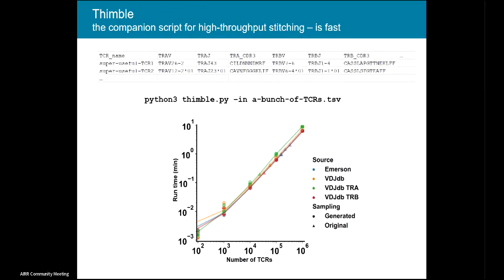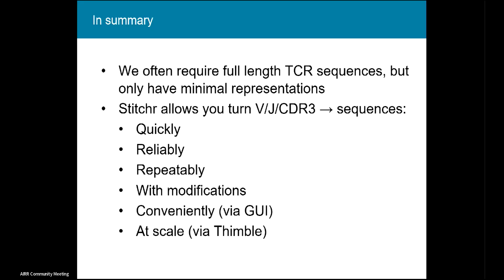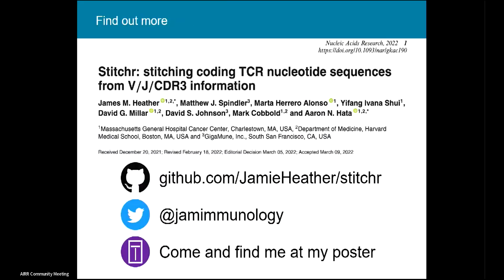We also have a high-throughput interface for Stitcher — a script called Thimble — which allows you to provide a spreadsheet of TCRs, either single or paired, and it will run across them sequentially. It does about a million TCRs in under ten minutes. Stitcher's code and paper are available online, and I've got a poster tomorrow at booth 206 if you'd like to find more information.